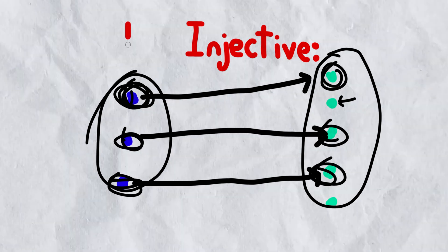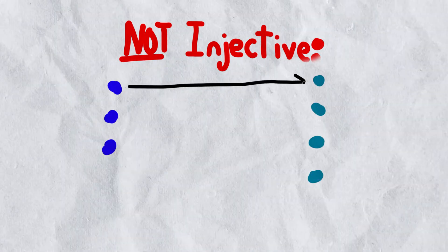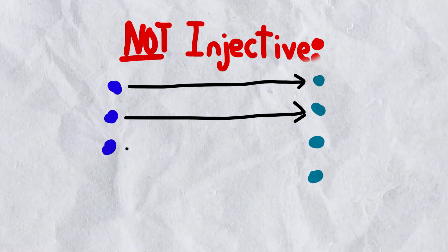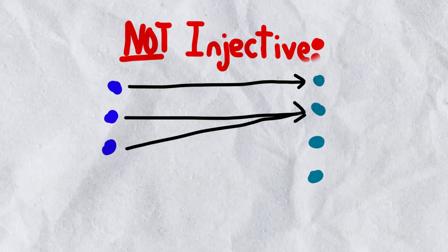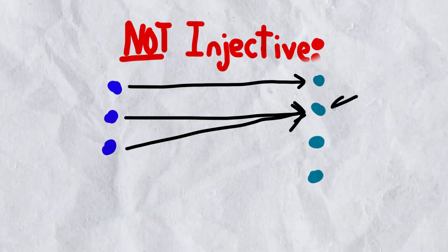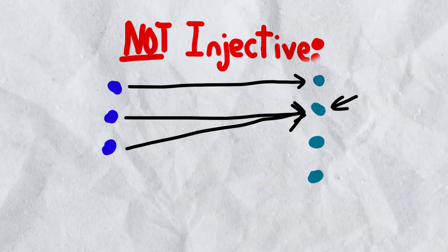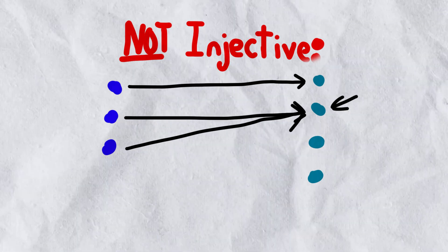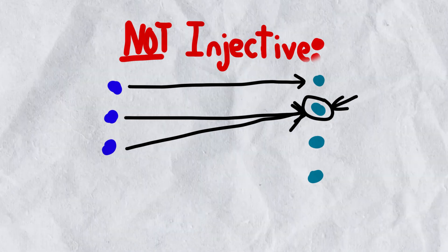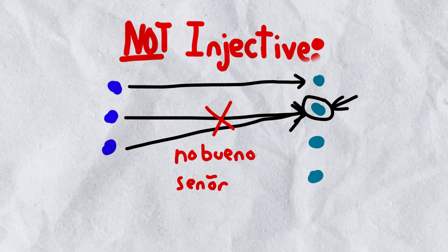And a function is not injective if we have some sorcery like this going on, where we have two elements in the domain mapping to the same two-timing range element. See how we have this? This is no bueno. So that is not injective.